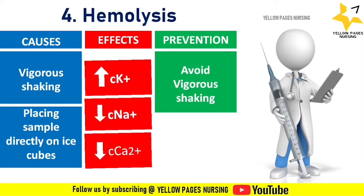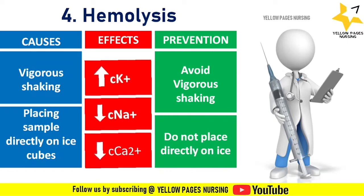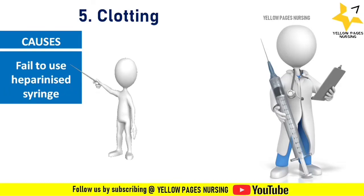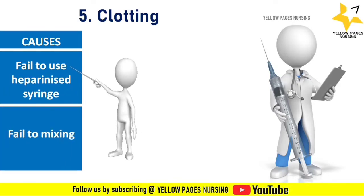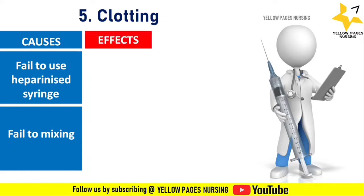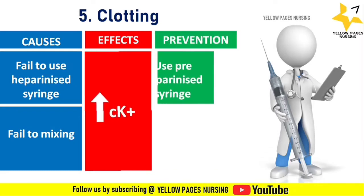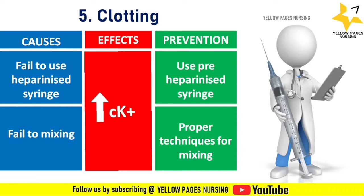Next comes clotting. Failure to use heparinized syringes or improper mixing may cause clotting of the sample. The effects include increase in potassium level, and use of such clotted samples may also affect the pathway of the ABG analyzer. To prevent this, use heparinized syringes and proper mixing technique — rolling it between the palms and inverting it vertically.